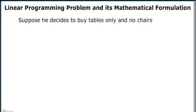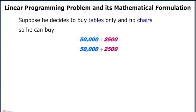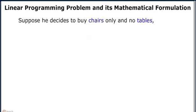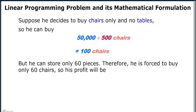Suppose he decides to buy tables only and no chairs. He can buy 50,000 divided by 2500, that is 20 tables. His profit in this case will be 250 × 20, that is Rs 5000. Now suppose he decides to buy chairs only and no tables. He can buy 100 chairs, but he can store only 60 pieces. Therefore he is forced to buy 60 chairs, and his profit in this case will be 60 × 75, that is Rs 4500.